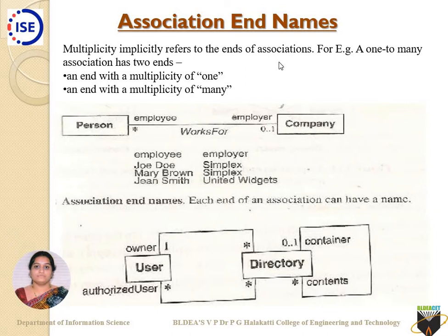Now comes another terminology: what is the association name? How are these two classes connected to one another? My association stands for 'Person works for a Company.' So 'works for' is the association name through which this particular class is connected to another class.